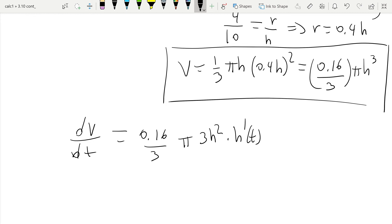If we were differentiating with respect to H, we would get 3H squared, but since we're differentiating with respect to t, we get 3H squared times H prime. So we can cancel these threes out, and we get that this is 0.16 π H squared times dH/dt.